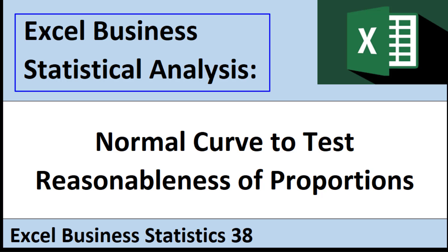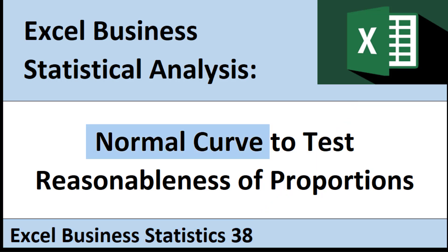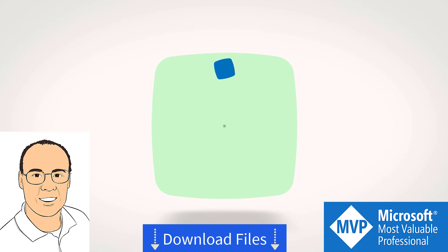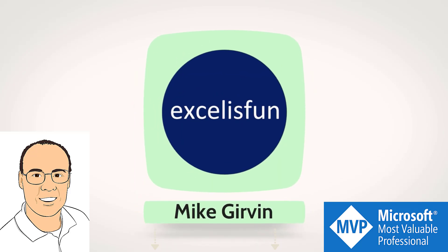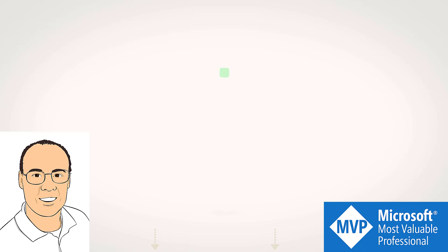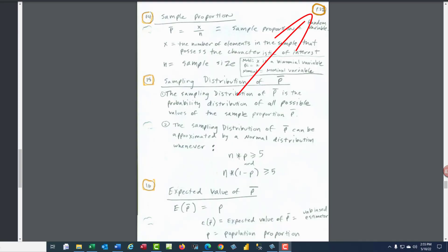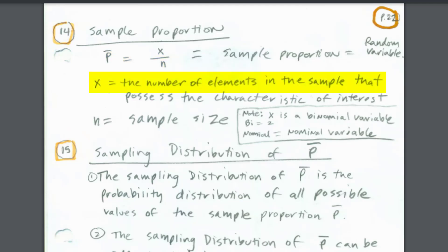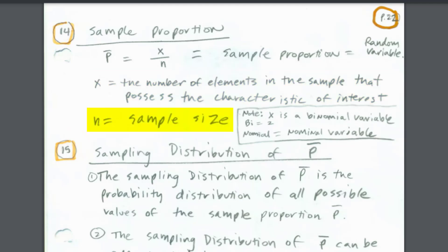Welcome to Excel Business Statistical Analysis video number 38. In this video, we're going to use the normal curve to test the reasonableness of proportions. We're on page 22 in our PDF notes, and we want to define a sample proportion: p-bar equals x over n, where x is the number of elements in the sample that possess the characteristic of interest, and n is the sample size.